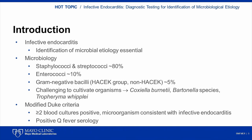Enterococci account for approximately 10% of cases. Gram-negative bacilli account for about 5% of cases and include the HACEK group organisms: Haemophilus, Aggregatibacter, Cardiobacterium, Eikenella, and Kingella species, and less commonly non-HACEK gram-negative bacilli such as the Enterobacteriaceae and non-fermenting gram-negative bacilli. A number of uncultivatable or challenging-to-cultivate organisms may cause endocarditis, the most common of which are Coxiella burnetii, Bartonella species, and Tropheryma whipplei.